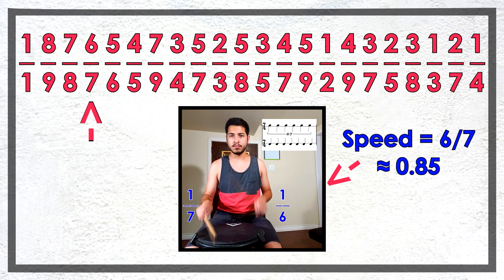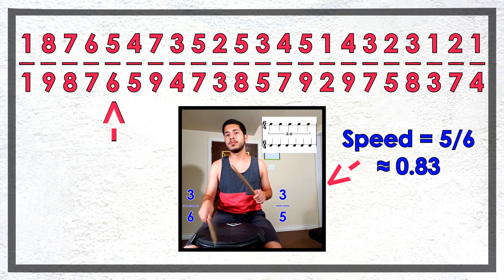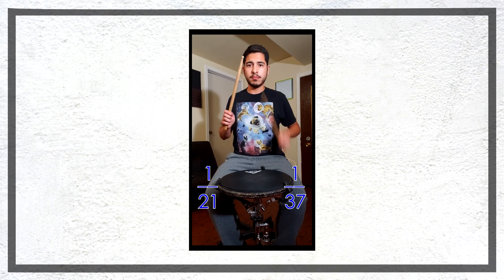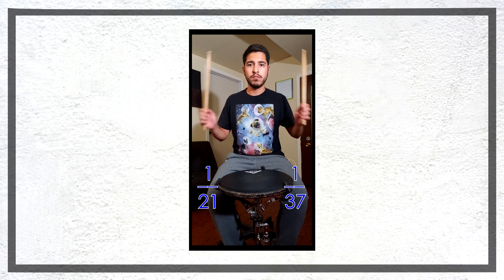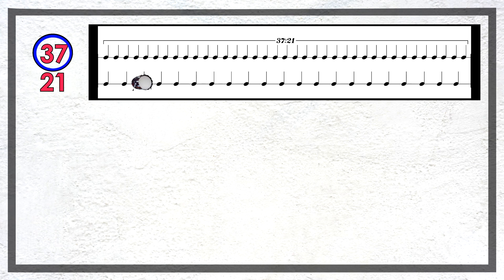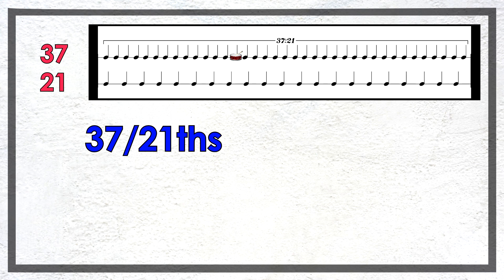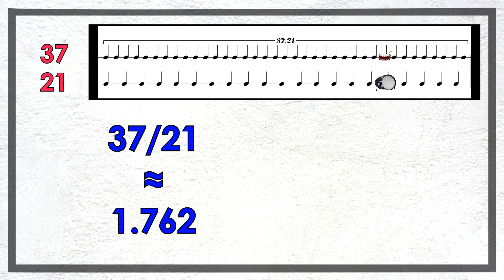Seeing these polyrhythms as ratios of speeds is going to give us an insight as to how to tackle bigger polyrhythms like a 21 against 37. If we set the 21 side with the metronome, then the 37 side will have 37 twenty-firsts the tempo of the 21 side. If we look at 37 over 21 as a value, we get about 1.762, which tells us the speed of the polyrhythm.